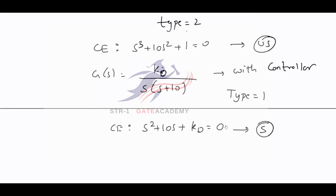We have reduced the type by 1. The system was type 2 and now the system is type 1. What we can conclude from this is we are making the system stable — that is, we are increasing the stability — but also we are increasing the steady state error by the introduction of the derivative controller.